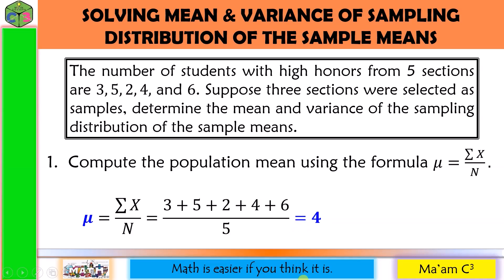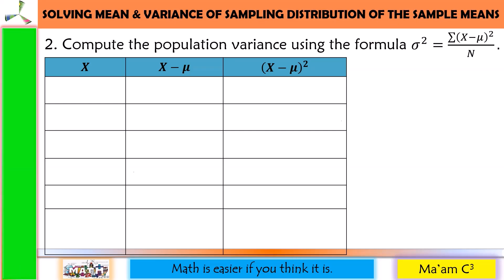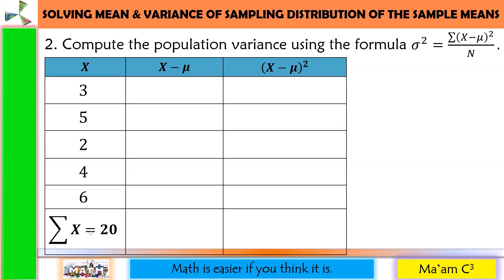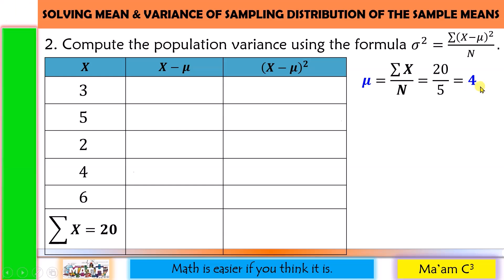There is another way of solving this, which I'll show you in Step 2: Compute the population variance using the formula variance equals summation of (x minus mu) squared, all over n. This table is already familiar — we used it when we discussed mean and variance of discrete random variables. We list down our data: 3, 5, 2, 4, and 6. Adding these up gives us 20. From here we can compute the population mean: summation of x over n equals 20 divided by 5, which equals 4. Same answer as Step 1. Now we can proceed with the second column: x minus mu.